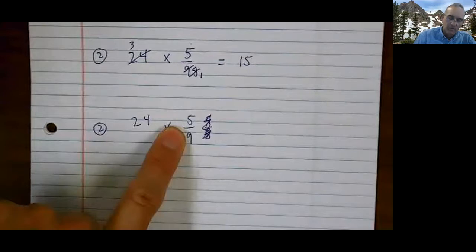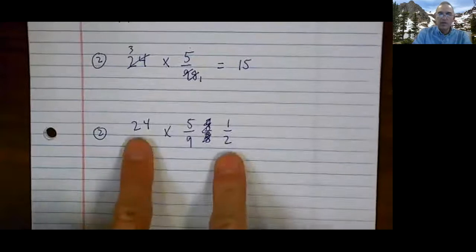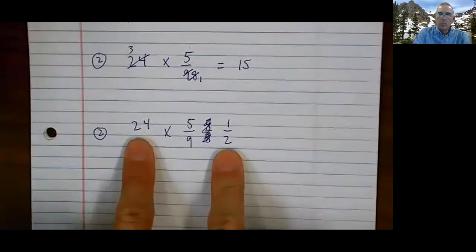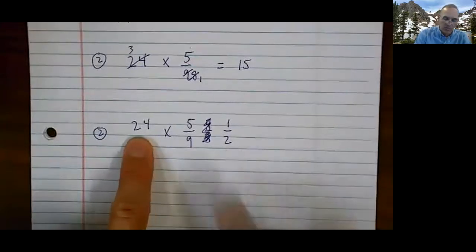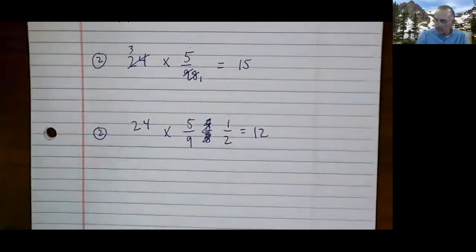And if it were five tenths, it would also be one half. So now look at these two numbers. What's one half of twenty-four? Twelve. Do you see it? Let's do another one.